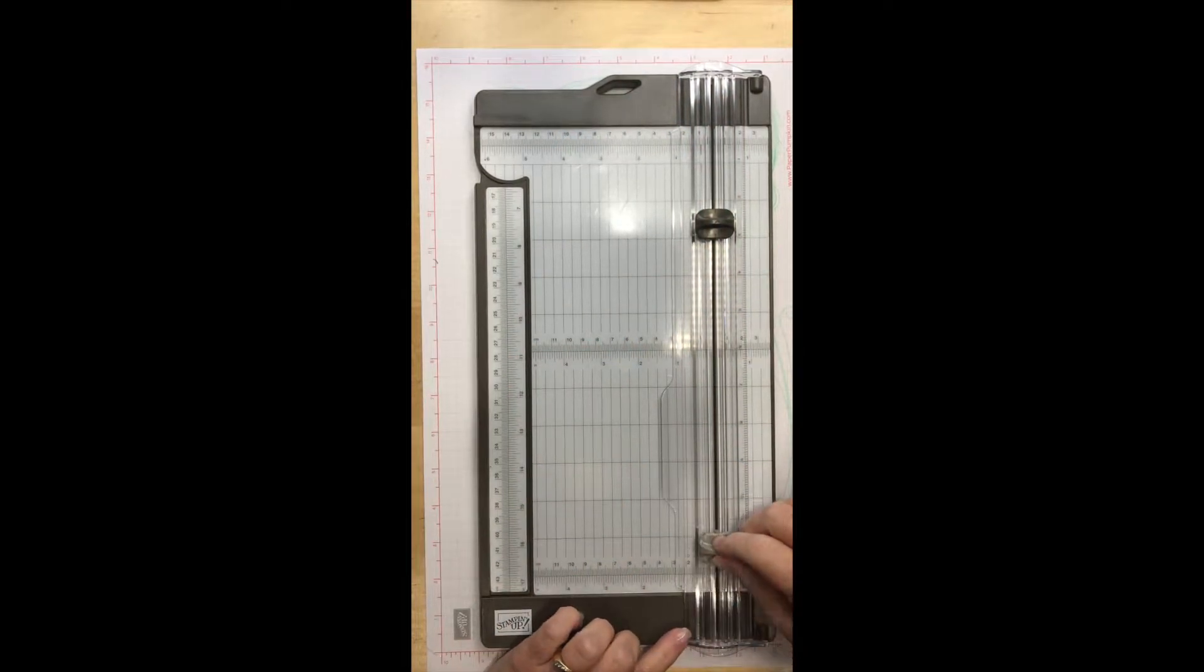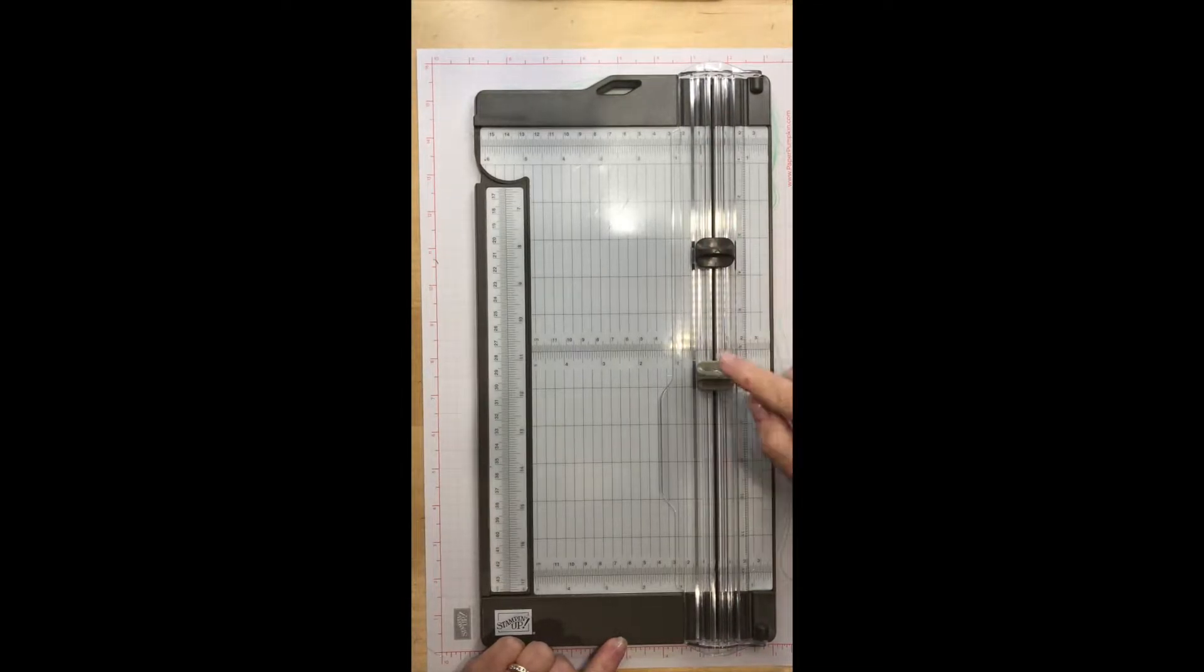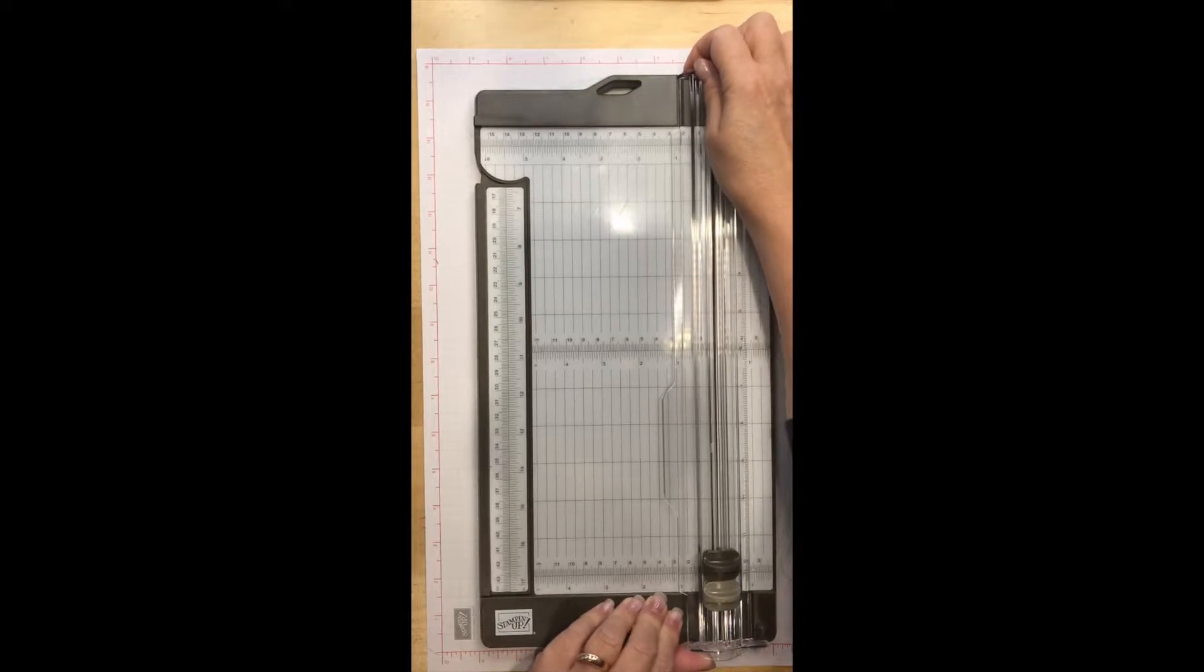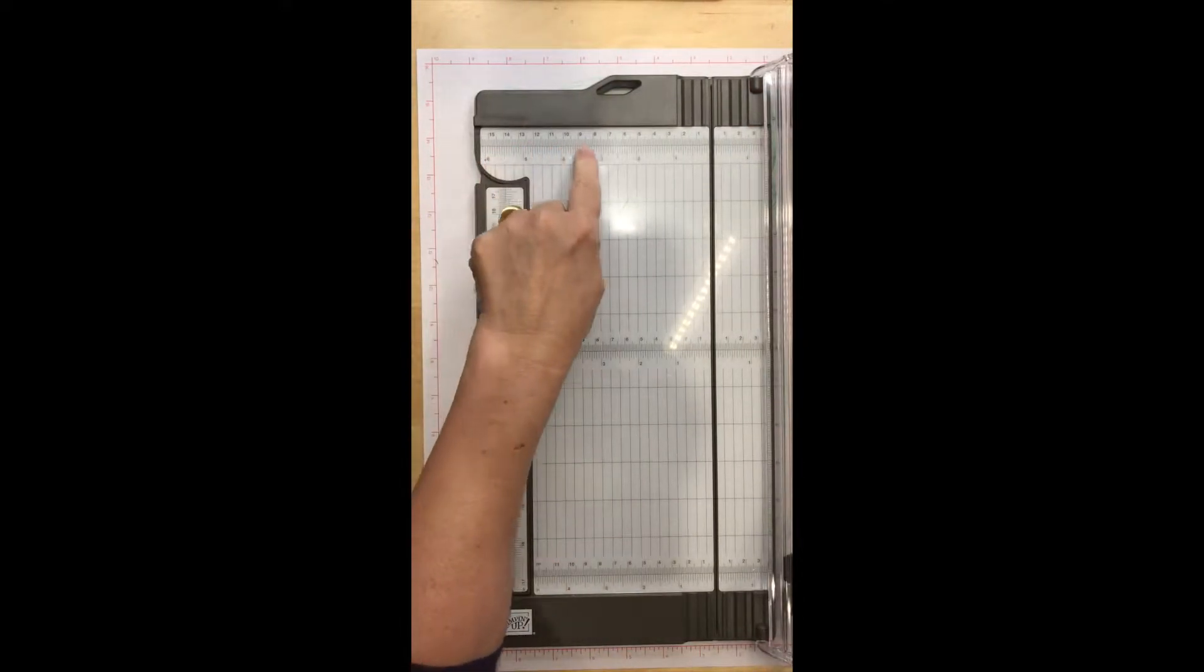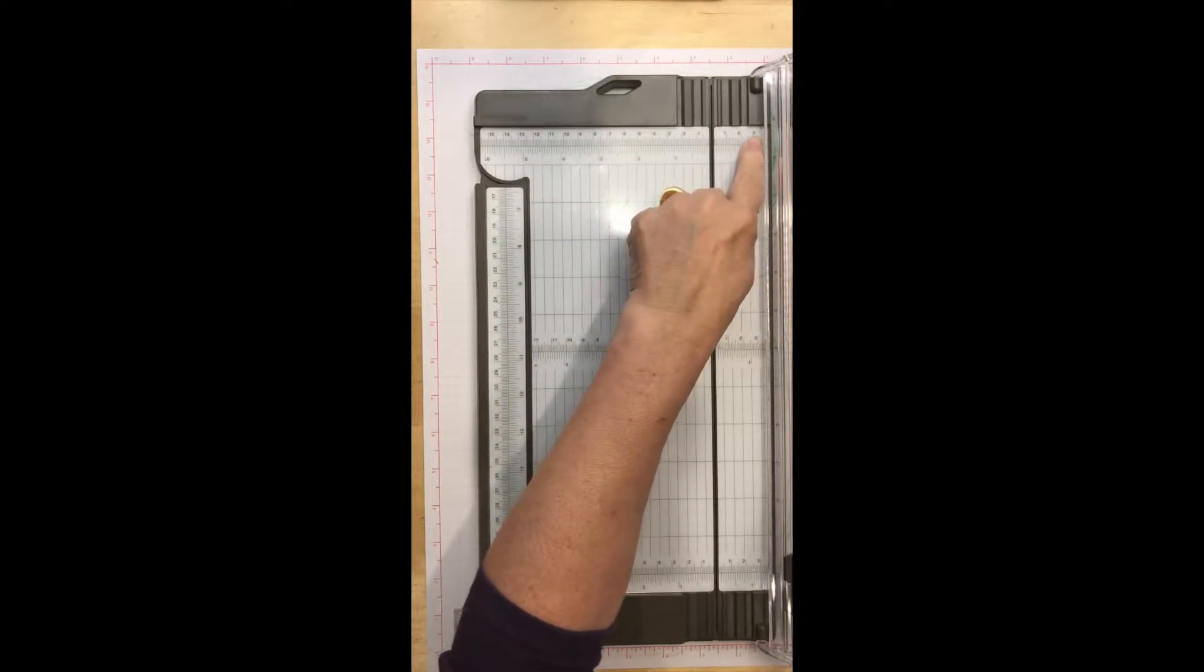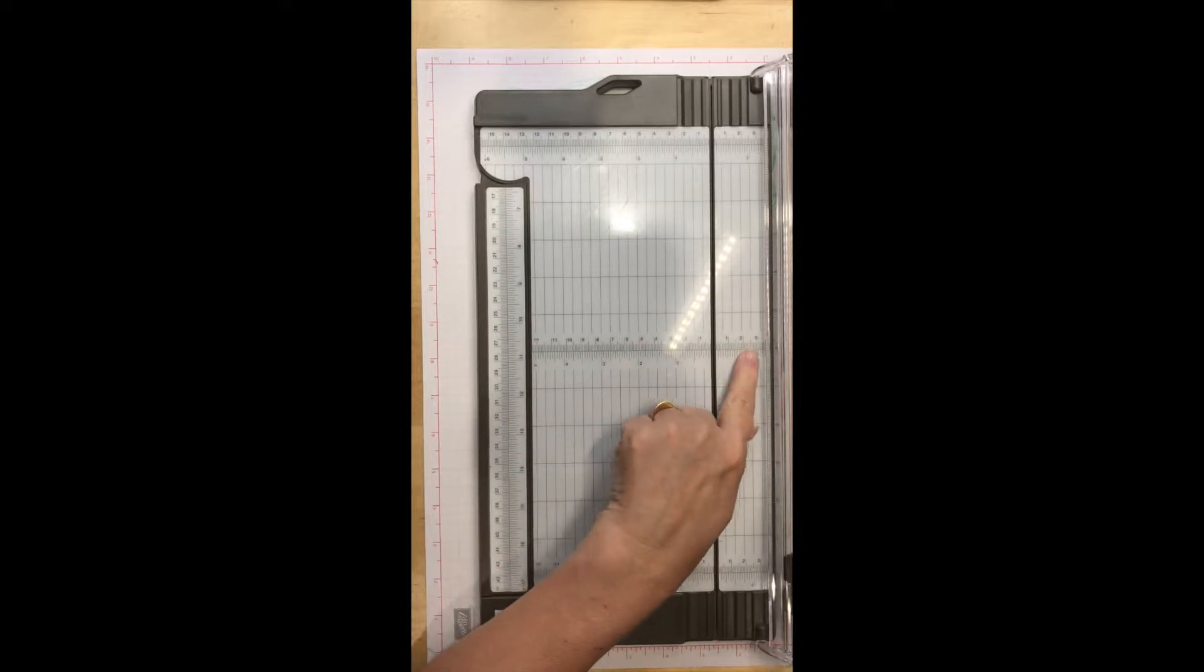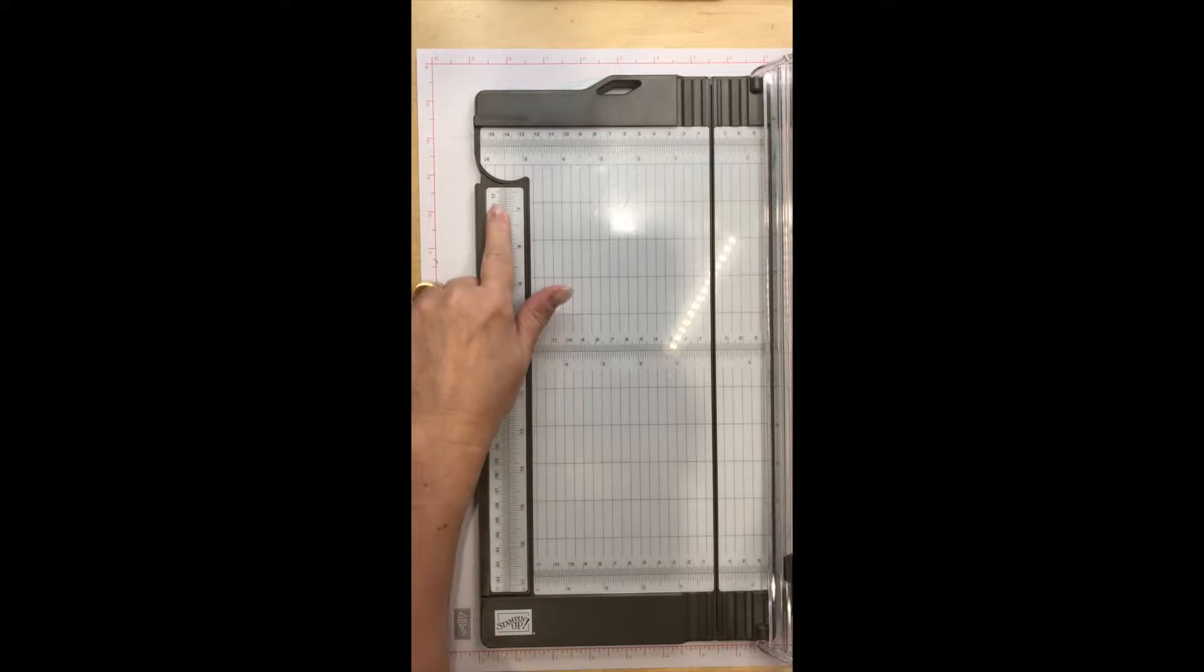It comes with two blades: one is a cutting blade which is dark gray, the same as our old trimmer, and the scoring blade is light gray. There's imperial and metric measurements on the actual platform. Let me just open it up. We've got the metric at the top here with the imperial, and this is so cool.